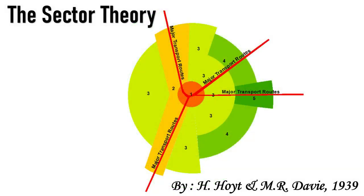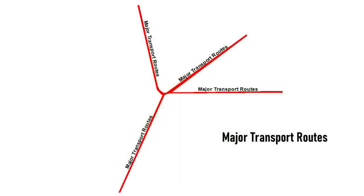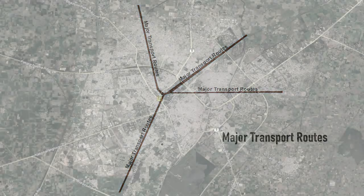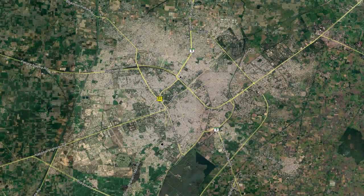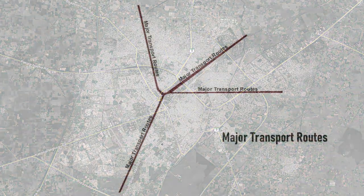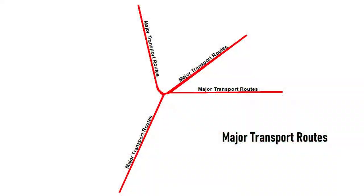The second theory is the Sectoral Theory. Hoyt and Davie gave this theory in the year 1939. According to this theory, patterns of urban land use are conditioned by the arrangement of routes radiating out from the city center, which create a sectoral pattern of land and rental values, which in turn influence the urban land use pattern.